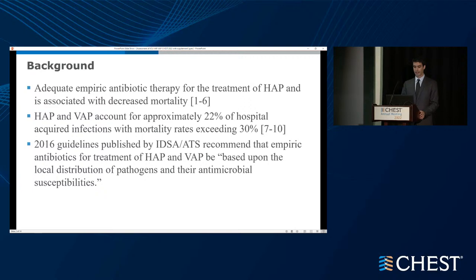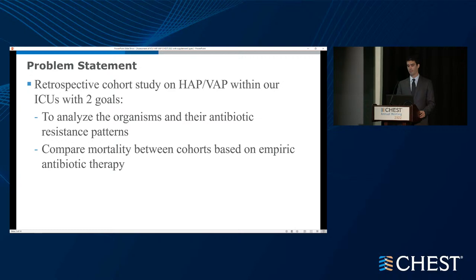The 2016 guidelines published by IDSA and ATS recommend that once HAP or VAP is suspected clinically, you should prescribe empiric antibiotics, because adequate empiric antibiotic therapy has been shown to decrease the mortality of such infections. Our study had two goals: first, to analyze all organisms responsible for HAP and VAP and analyze their resistance patterns to create an antibiogram for each of our three ICUs; and second, to compare mortality rates between cohorts based on the empiric antibiotic given and the timing at which it was administered.